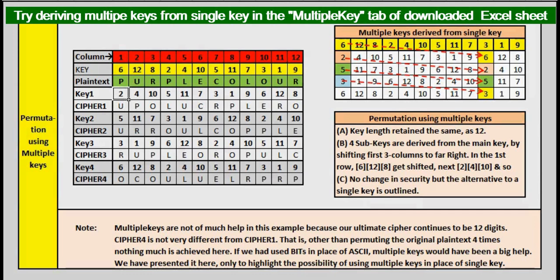When we permute at ASCII level, the benefits of multiple keys will not be apparent. We will understand it more only if we go down to bit level. Here we showcase multiple keys only as an available methodology, and nothing more.